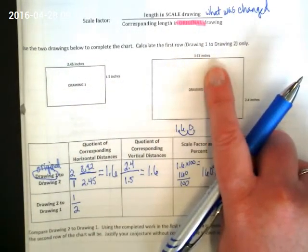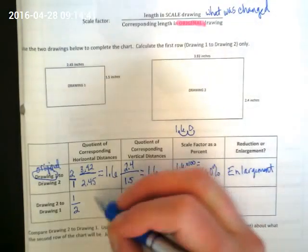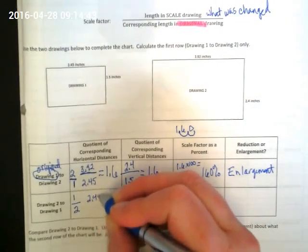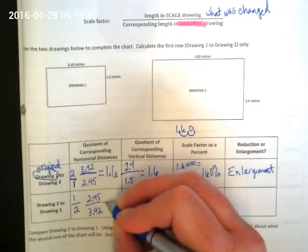And we're going to do the comparison again. So horizontal distance, first we're starting with drawing 1, and it's 2.45 over 3.92. And let's divide those again.